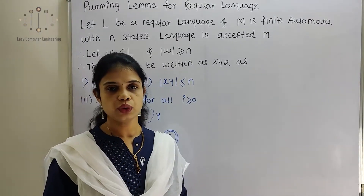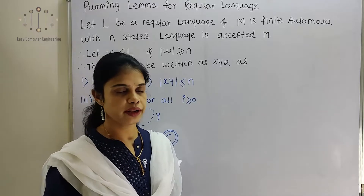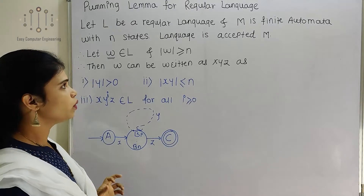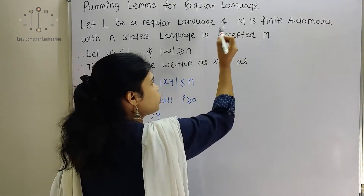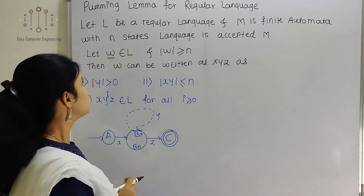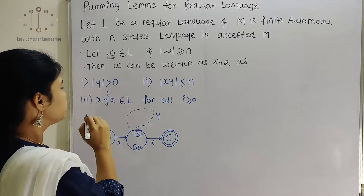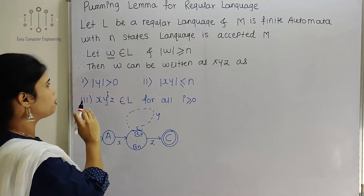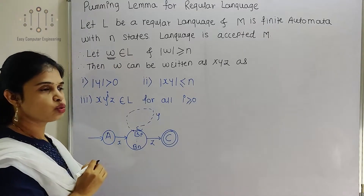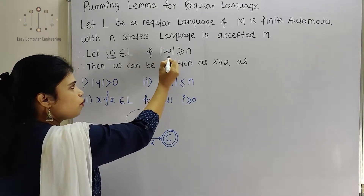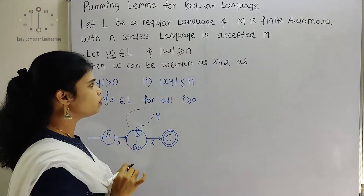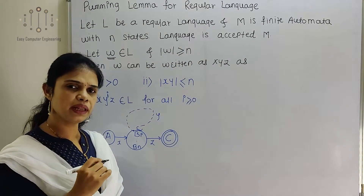The Pumping Lemma theorem tells us only that a given language is not regular. Let L be any regular language, and let M be a finite automaton that represents that language with N number of states. Consider Omega as a string which belongs to L, where the length of Omega is greater than or equal to N. We will see this with the help of an example in detail.